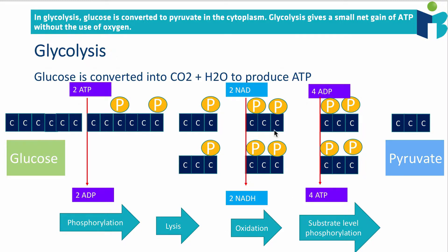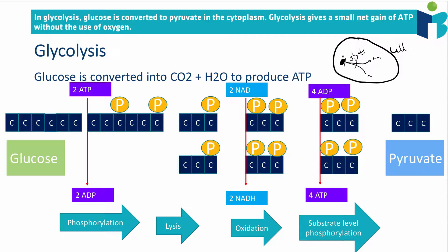So what happens in glycolysis? Let's first talk about where it happens. If we look at a cell — this is the cell membrane out here — we have a molecule of glucose, and what we want to do is make energy from it eventually. As we said in topic two, this can happen either via anaerobic or aerobic cell respiration, but the first part of both processes is the same: glycolysis. In glycolysis, we take a molecule of glucose and break it up, which gives us a small amount of ATP, and the final product is pyruvate.